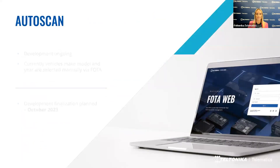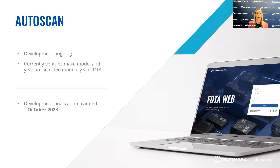Let's move to AutoScan, an exciting feature we will offer soon. AutoScan provides automatic vehicle recognition, making device configuration a breeze. The device can identify the type of car without requiring any additional steps in the configuration process, streamlining setup and saving time and effort. While we continue to develop AutoScan, we currently have a manual solution where you can choose the vehicle type via PhotoWeb. Our goal is to finalize AutoScan development by October this year, eliminating the need for manual selection and ensuring a seamless and efficient configuration process.